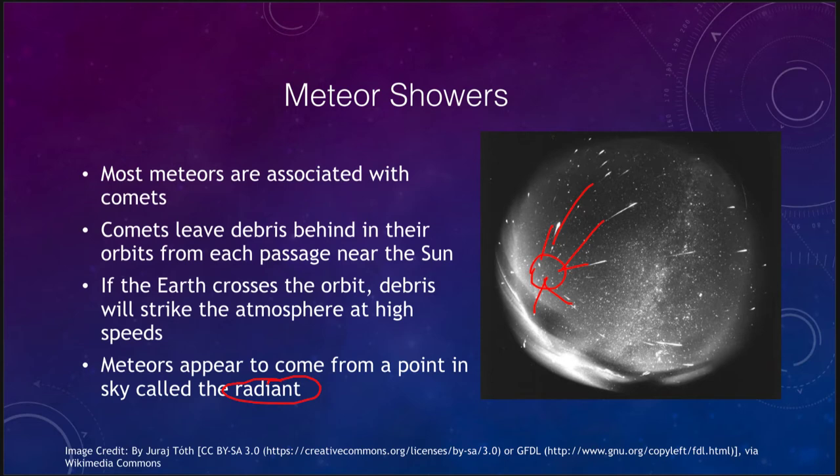If you actually traveled out there, you would see that the meteoroid pieces are still exactly the same distance apart — they are still traveling in the same orbit, equally spaced.